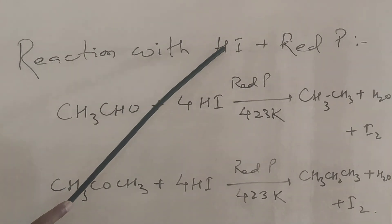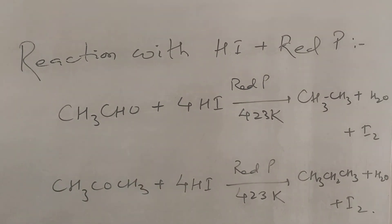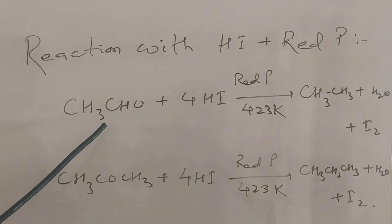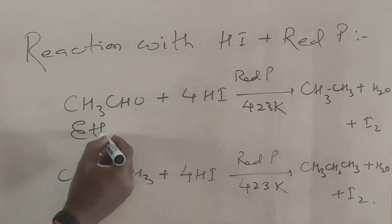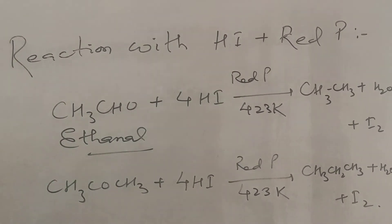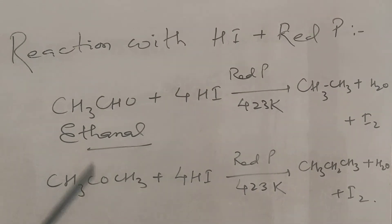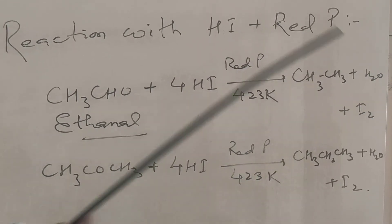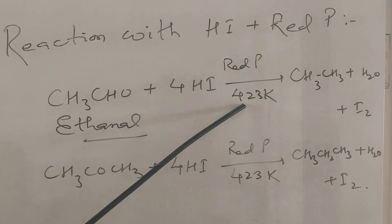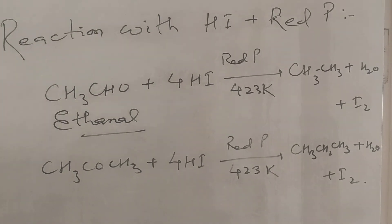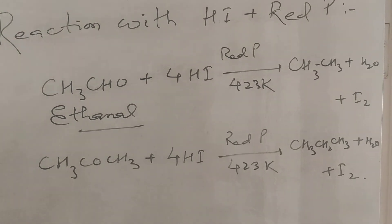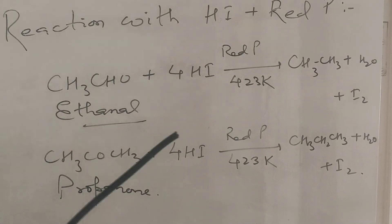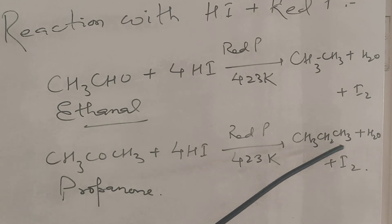Now we are going to see the reaction of carbonyl compounds with HI and red phosphorus, which is a very strong reducing agent. If we treat ethanal with HI and red phosphorus, we get ethane, water, and I2. If we treat propanone with HI and red phosphorus at 423 Kelvin, we get propane, water, and I2.